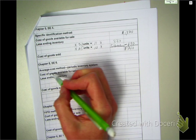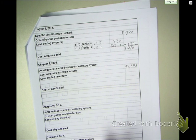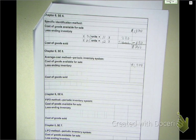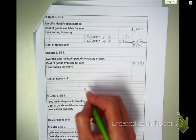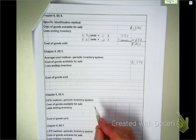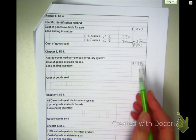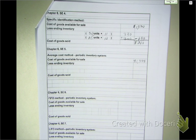In the average cost method, we're still using that $1,370 for our goods available for sale. That doesn't change. What we're going to do here is, what are we going to divide this by to get our unit cost? Look in your notes, or look back at page 300 in your textbook.